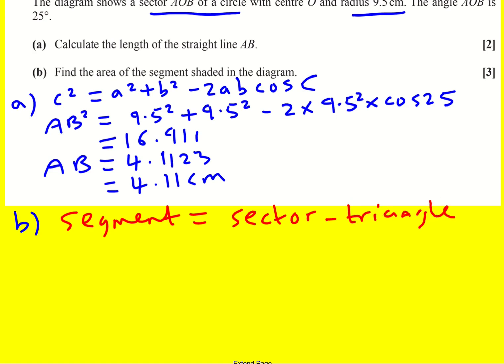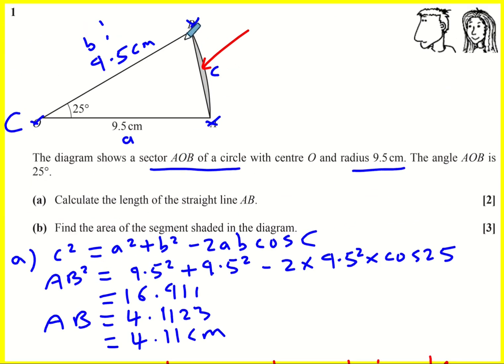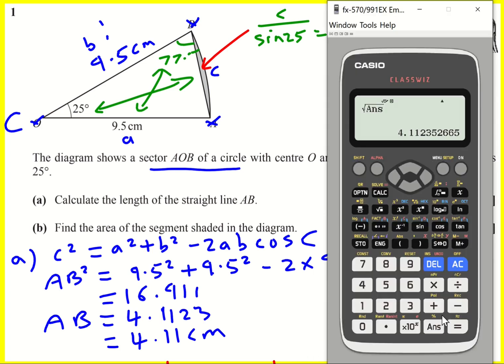By the way I should have said for A you could use the sine rule as well, because this is an isosceles triangle. You could work out these angles and you've got an angle side pair. It's going to be 155 when you do 180 minus 25 divided by 2, which will be 77.5. And then you could write down AB divided by sine 25 equals 9.5 over sine 77.5. Arguably this is a bit quicker I think.